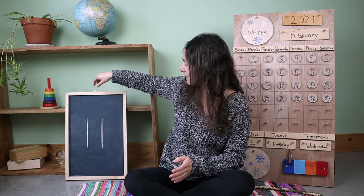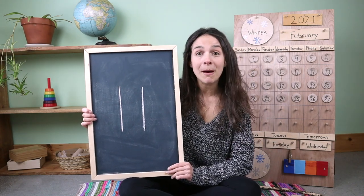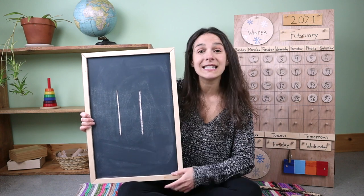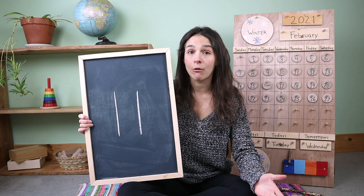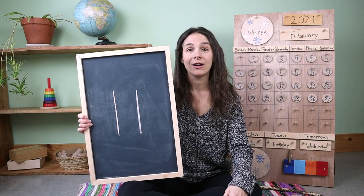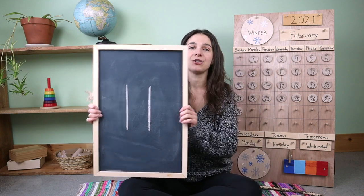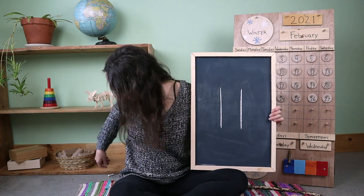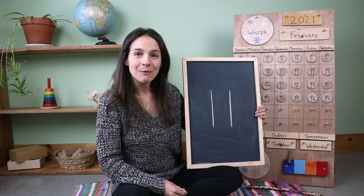Yesterday, we also learned a new number. Look at this number. Do you remember what it is? 11. You're right, friends. This is the number 11. Now, usually we would count our fingers, but we don't have 11 fingers to count. Instead, we started counting tally marks yesterday. Tally marks are little lines that I drew on the bottom of my chalkboard. So I'm going to make 11 tally marks. Will you count them with me?